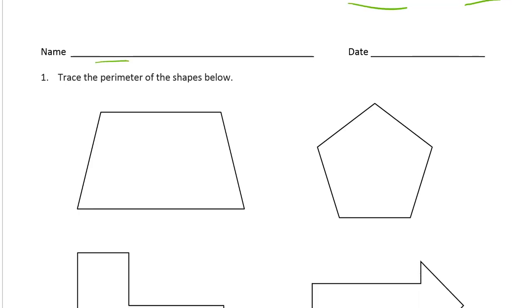Trace the perimeter of the shapes below. Perimeter and area are often confused by third graders, but perimeter is the distance around the outside of the shape.